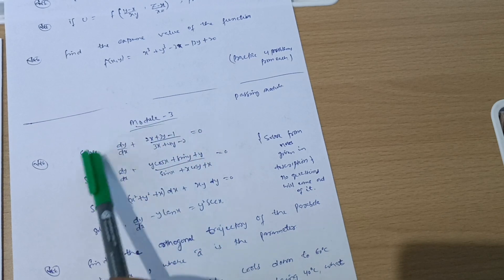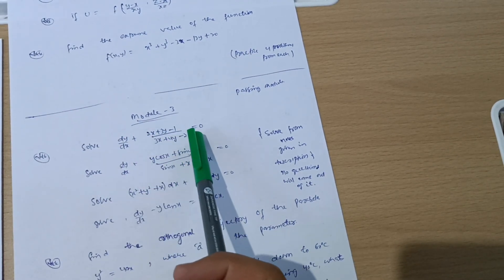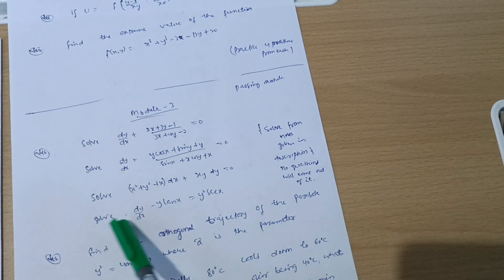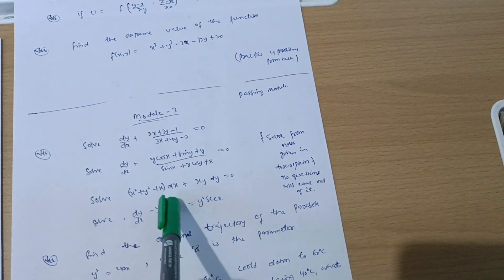Next passing module we have: Module 3, where you have to solve some differential equations. dy/dx + (2x + 3y - 1)/(3x + 4y - 2) = 0. These are the varieties which I have taken here. You can take down the screenshot for it.